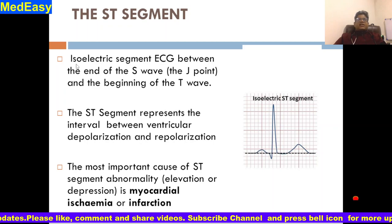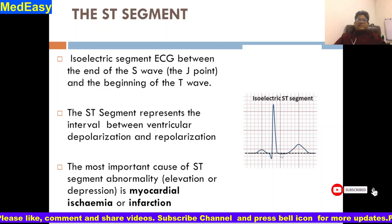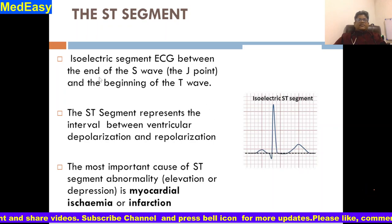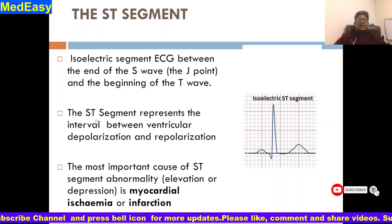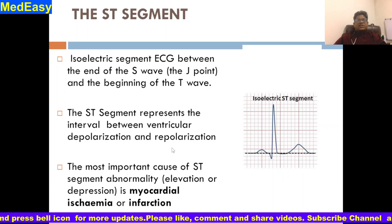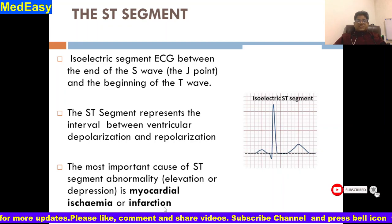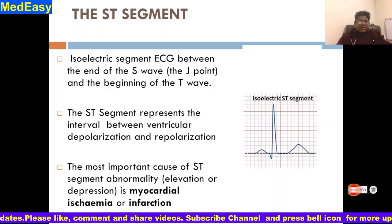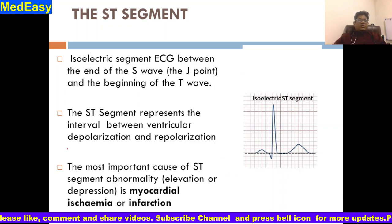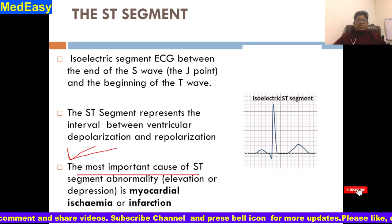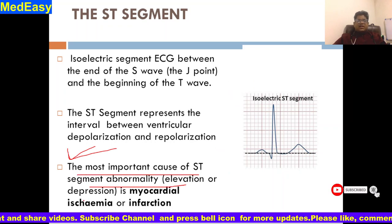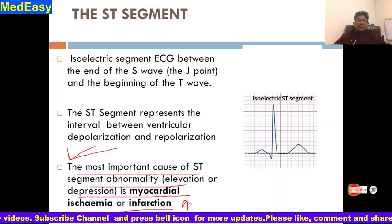Now coming to the ST segment — it is an isoelectric segment, a flat segment. It is between the end of the S wave, the J point, and the beginning of the T wave. It represents the interval between ventricular depolarization and repolarization. The most important cause of ST segment abnormality — elevation or depression — is myocardial ischemia and infarction. This is very important to remember.